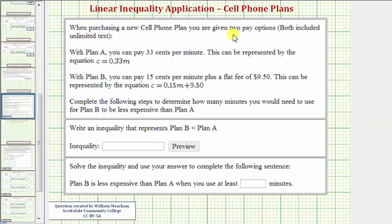When purchasing a new cell phone plan, you are given two pay options. Both include unlimited texting.